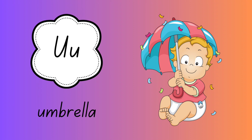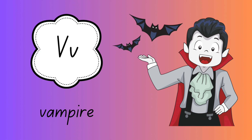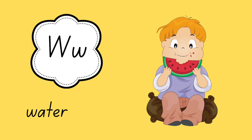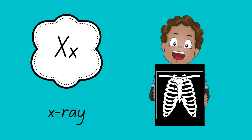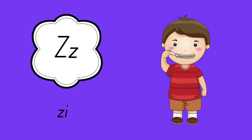U for umbrella. V for vampire. W for watermelon. X for x-ray. Y for yo-yo. Z for zip.